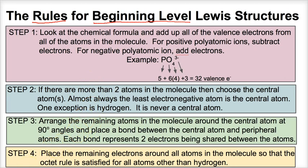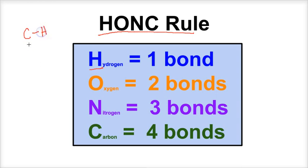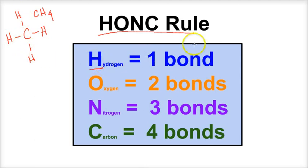One basic rule is called the HONK rule — again, a rule, so there are exceptions. H is for hydrogen, and hydrogen generally likes one bond. For example, the Lewis structure for methane, CH4, shows that all hydrogens only have one bond. When drawing Lewis structures, hydrogen will always end up with one bond.